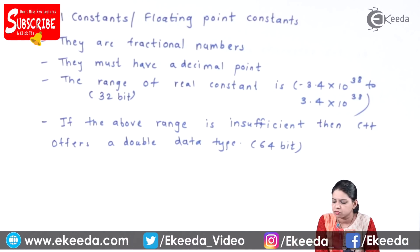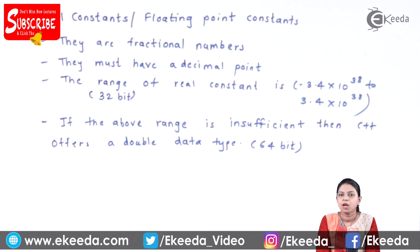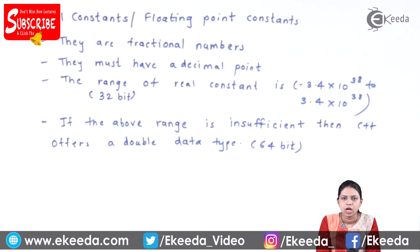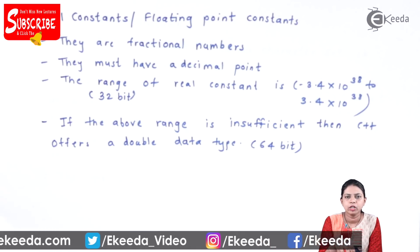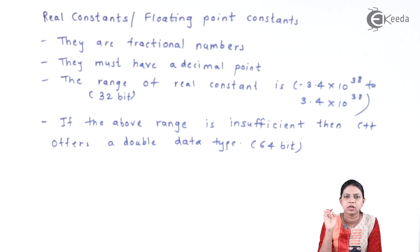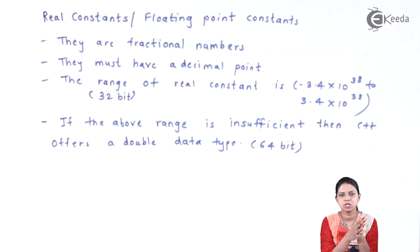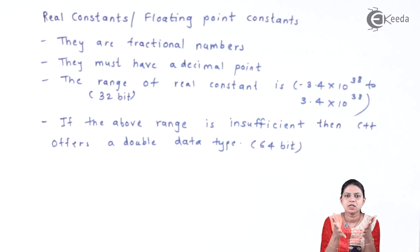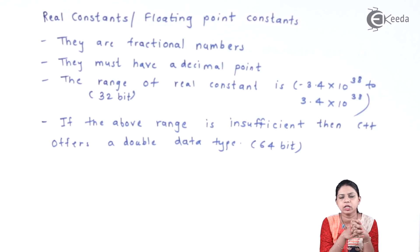If the above range is insufficient, C++ offers a double data type which can carry up to 64 bits. So if your answer is bigger than the floating point constant range, in that case we make use of double constant. We have seen integer constant, then float constant; if your answer is too large, instead of float we can go for double.